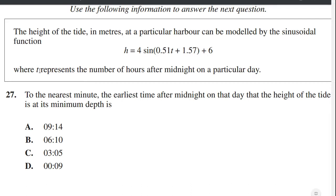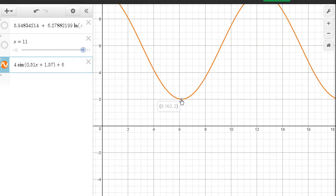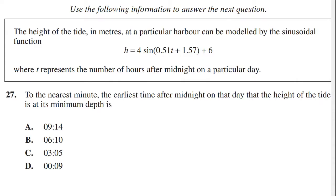So if t equals 0, that's midnight. So they want to know the lowest point on that curve after midnight. So you go back to your graph. If this over here is midnight, where the time is 0, they want to know the first bottom of that curve. And it's down here. The height is 2. And the time is 6.162. 6.162. How do we convert that? Well, the 6 is just the 6 hours. And the 0.162 is one sixth of 1 hour, which is 10 minutes. So there we go. The answer is B. 6 hours and 10 minutes.